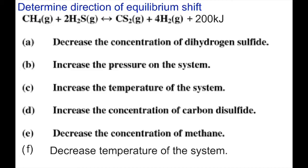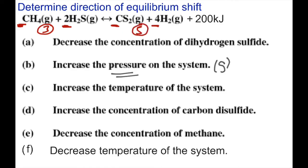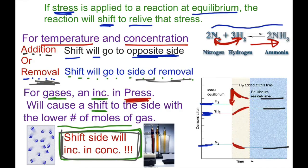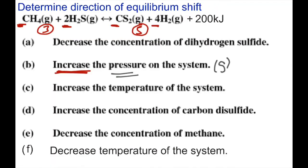Moving on to B: increase in pressure on the system. For pressure, we must look at gas and the number of moles of gas. On the reactant side, there is one mole of one species and two moles of another, giving three moles of gas. On the product side, one plus four gives five moles of gas. Increasing pressure shifts the reaction to the side with fewer moles of gas — that's the reactant side — so the reaction shifts to the left, making more H2S and more CH4.